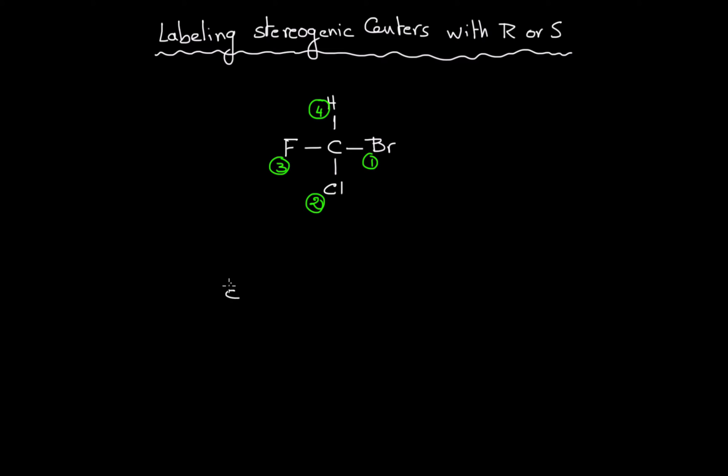Let's consider another example where we have different substituents: hydrogen here, CH3 here, CH2CH3, and OH. To assign priorities for this example, we know that oxygen has the highest atomic number, which is eight, compared to carbons or hydrogen. So this will get number one priority. For hydrogen, it has the lowest atomic number, so it gets number four priority.